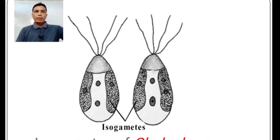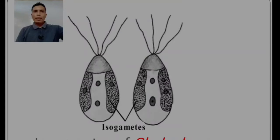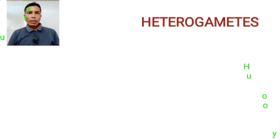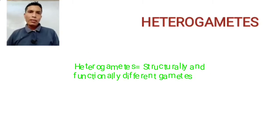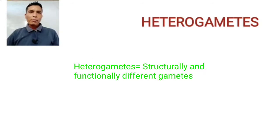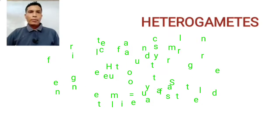Look here — these are the male and female gametes of Cladophora. Now, heterogametes. Morphologically distinct male and female gametes are called heterogametes.